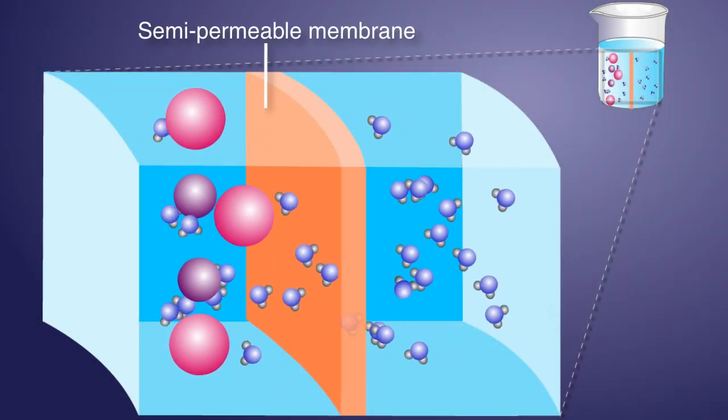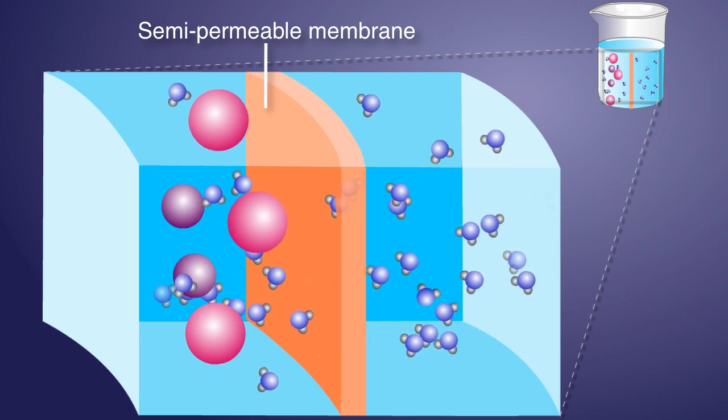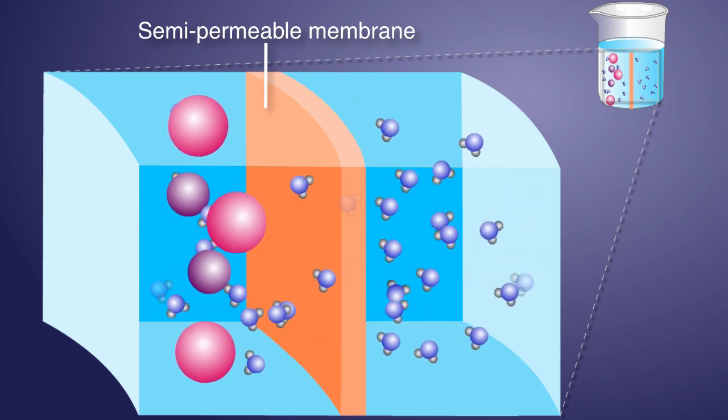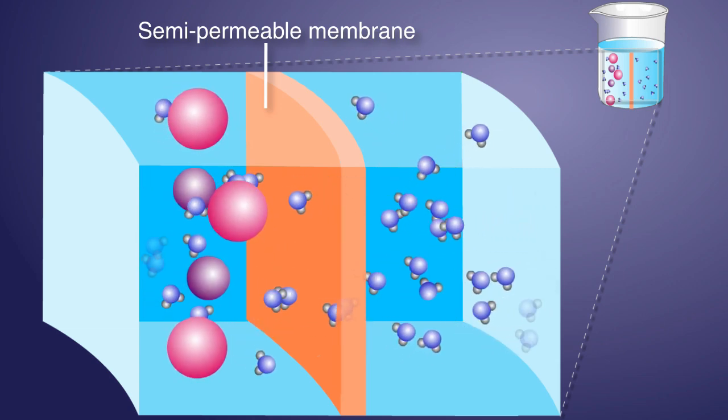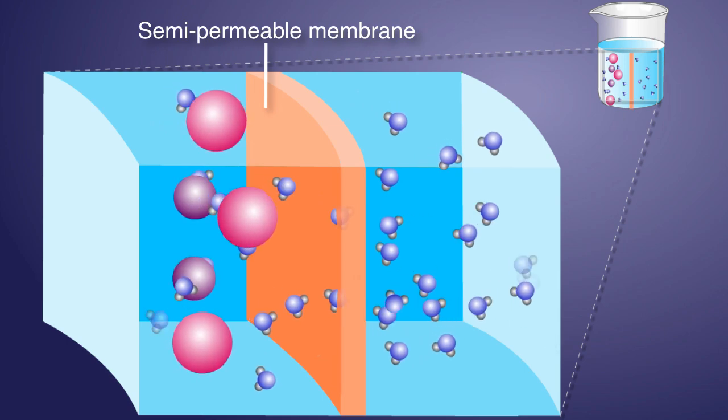A semipermeable membrane, also called a selectively permeable membrane, is a membrane that allows certain molecules or ions to pass through it while blocking others.